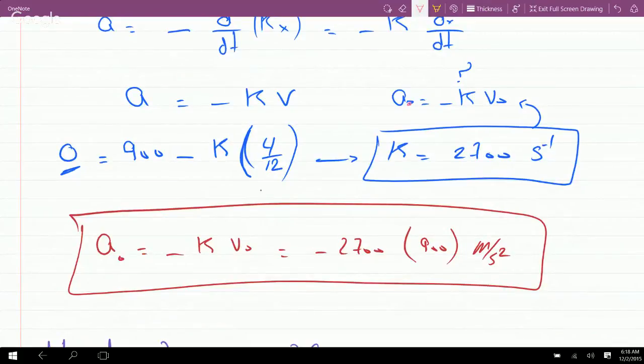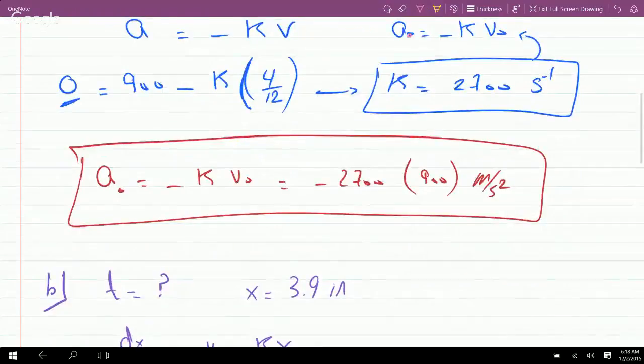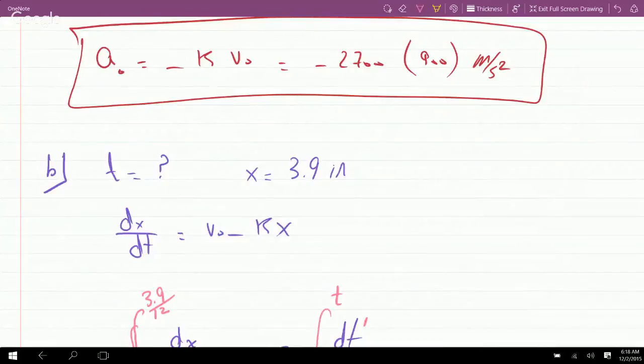I get 2700 seconds to the minus one as the units for k. So now I can plug this back into the acceleration. a₀ is minus k v₀. I have v₀ of 900, I calculated k to be minus 2700...